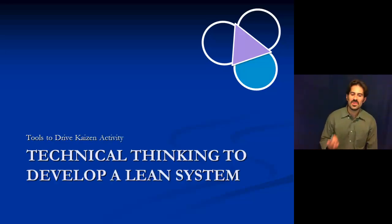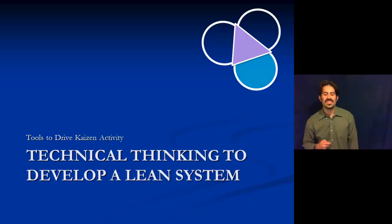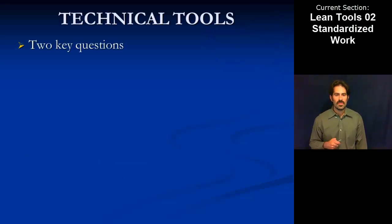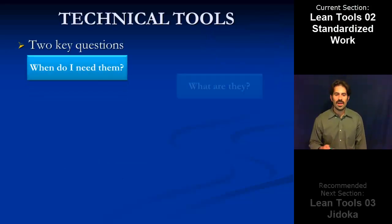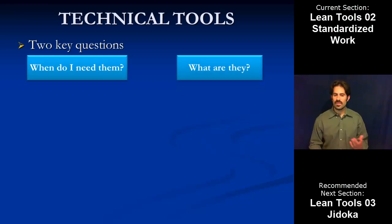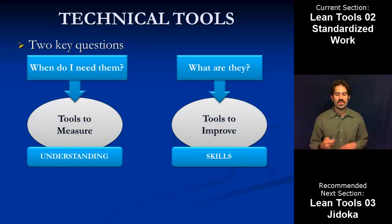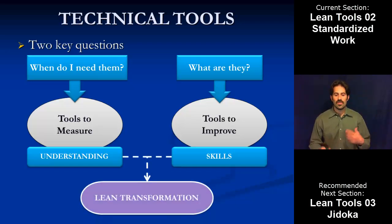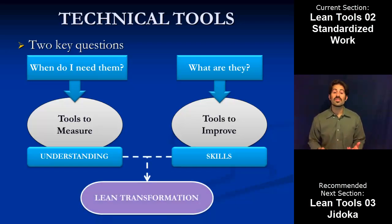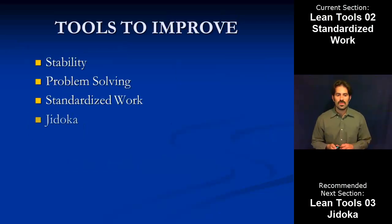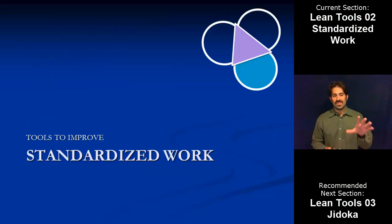Welcome, everybody. We're going to continue on with some of the technical thinking in the tools module. As a quick review of how this fits in with everything else we're doing: the tools to improve we're focusing on are really the skill side of the lean transformation in terms of the technical aspect. In this section, we're going to be taking a look at standardized work specifically.